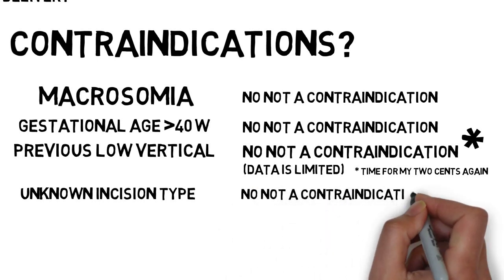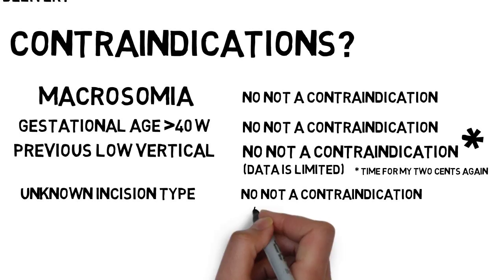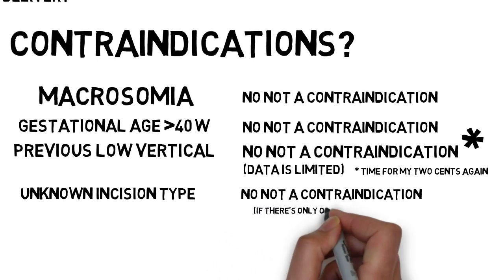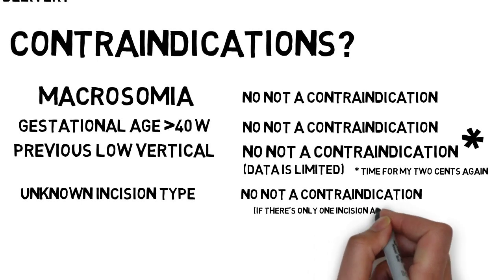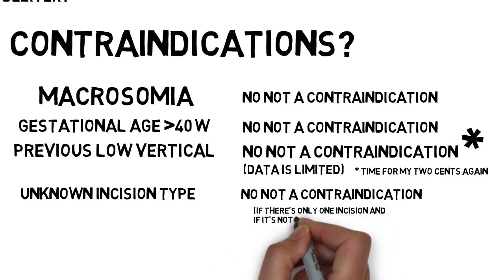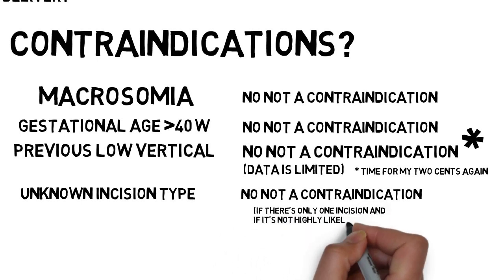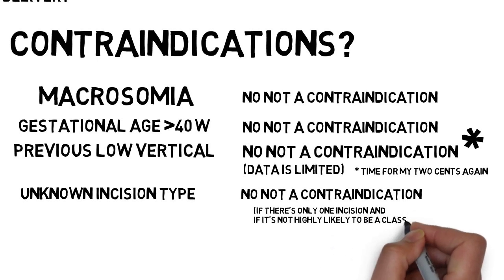They admit that this is probably because most of the unknowns are actually transverse incisions. They conclude that if there is one previous incision but it is of unknown type, it's okay. Okay unless you have a high suspicion that it was vertical. The example cited being a previous C-section on a very preterm fetus.